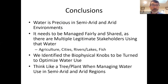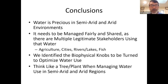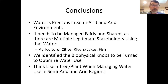In conclusion, water is a precious commodity in semi-arid and arid regions and must be managed fairly, shared among multiple legitimate stakeholders — in California that means agriculture, cities, rivers, and fish. As Mark Twain said, 'Whiskey's for drinking; water's for fighting over.' We need to think more scientifically about water use. I hope this talk has provided tools to understand the knobs we can turn to optimize water use among stakeholders, and ultimately to think like a tree when monitoring water in dry ecosystems. Thank you for this opportunity and I wish you the best in your workshop.